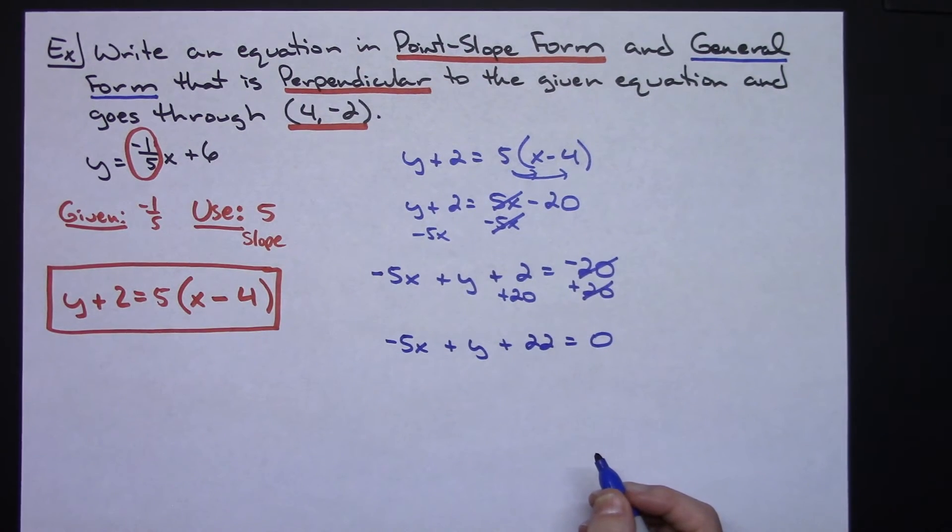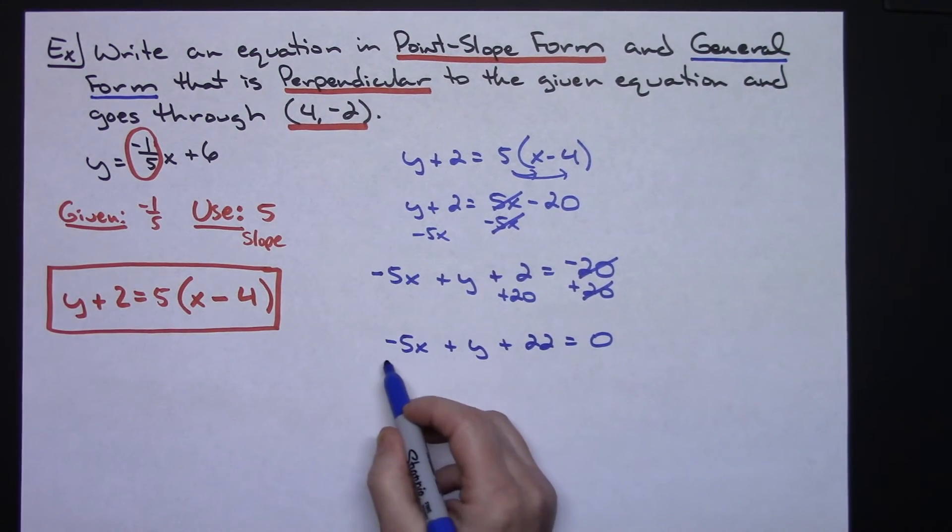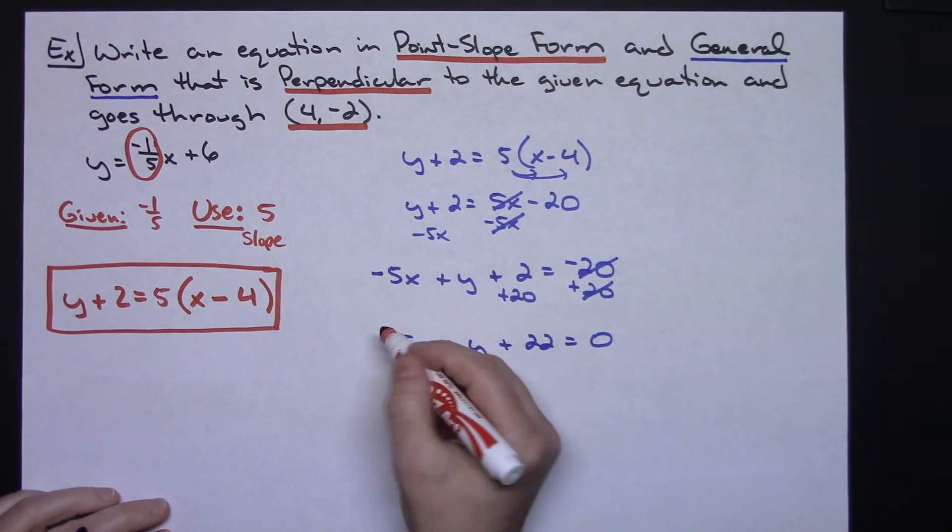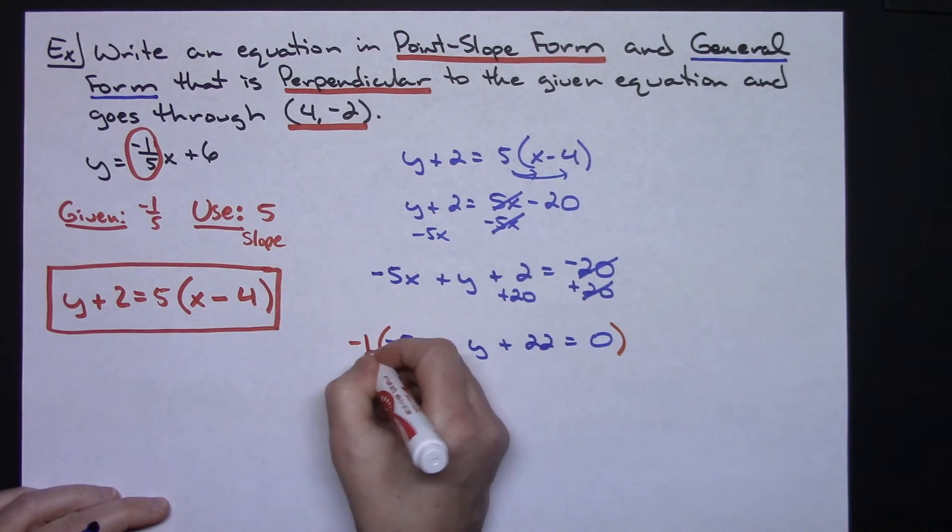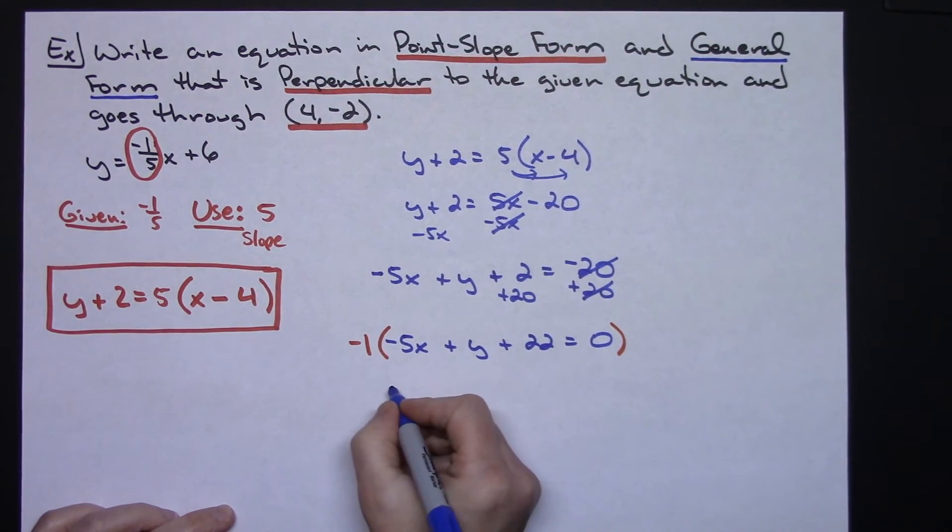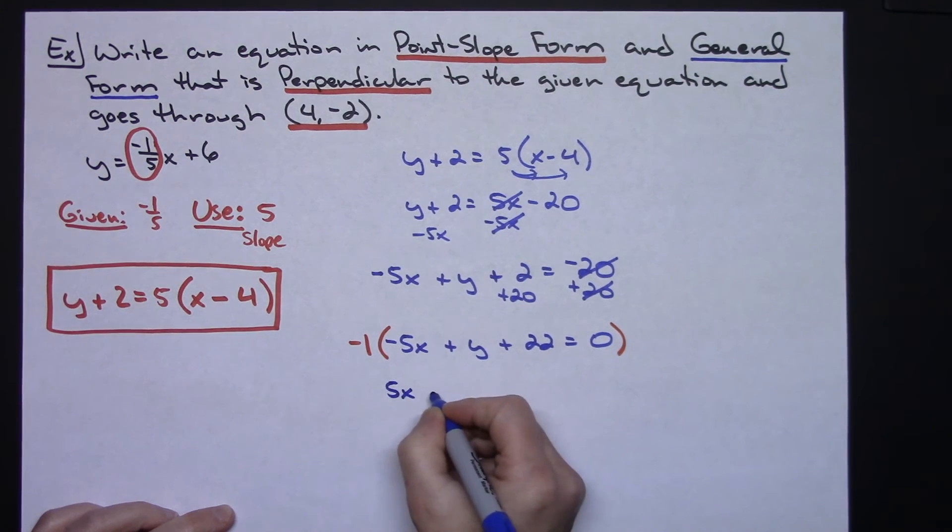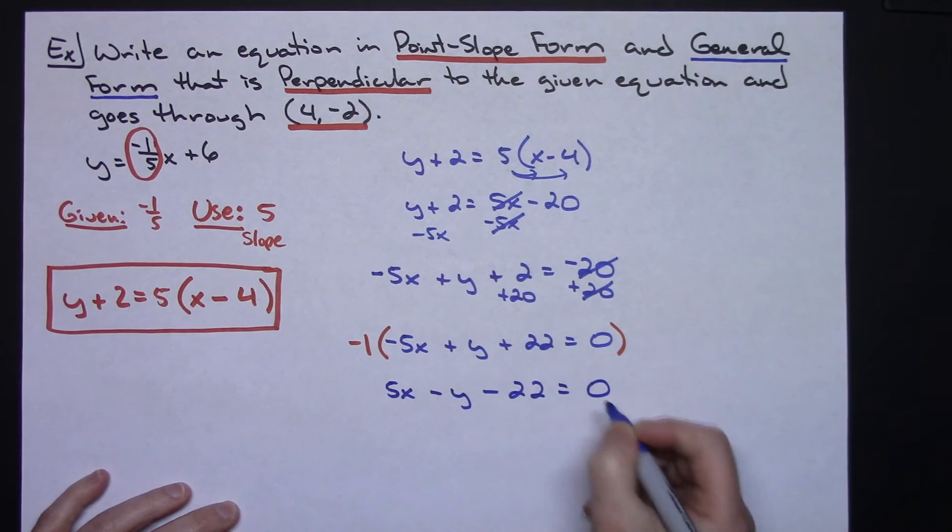And then there is a rule that says that that leading term must be positive and must be an integer. Well it is an integer but it's not a positive integer. It's got a negative 5 on it right now. So that means to really truly be in general form I'm going to have to multiply through by a negative 1. In other words, go through and change all the signs. So then I'll have a 5x minus a y minus 22 equals 0.